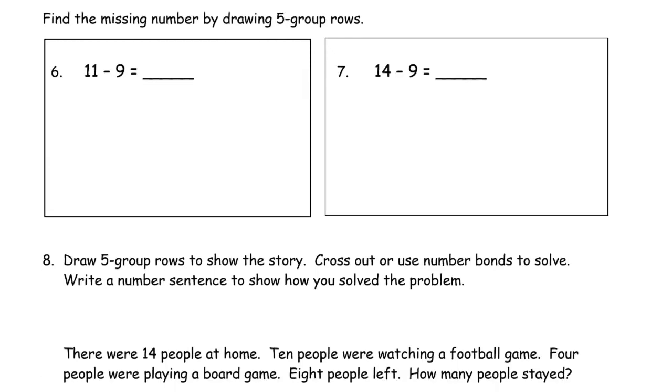And now we're finding the missing number by drawing 5 group rows. So the missing number here, 11 minus 9. So we have 11 and we're going to cross out 9. 1, 2, 3, 4, 5, 6, 7, 8, 9, 10, and there's 11. So there's our 5 group rows. We cross out the 9 from the 10. We know there's only going to be one left when we cross out 9. So I'm not even going to count how many I crossed out because I know there should be only one left. And there's 2 left there. That 1 plus the 1 from the 11.